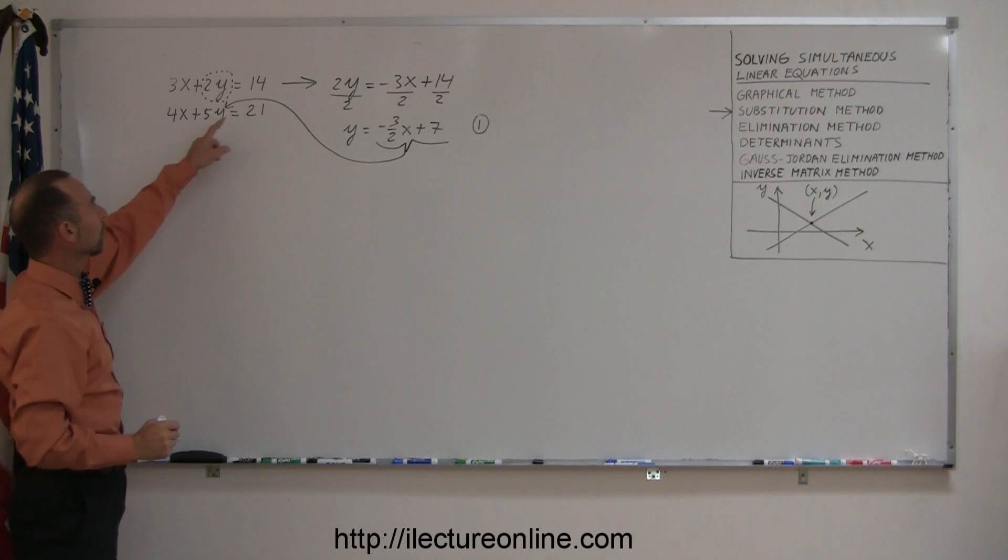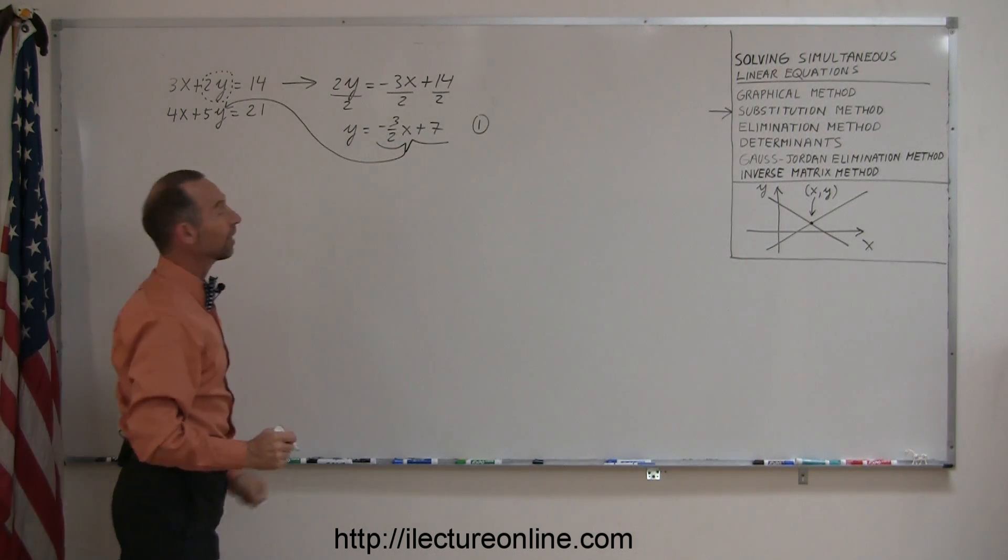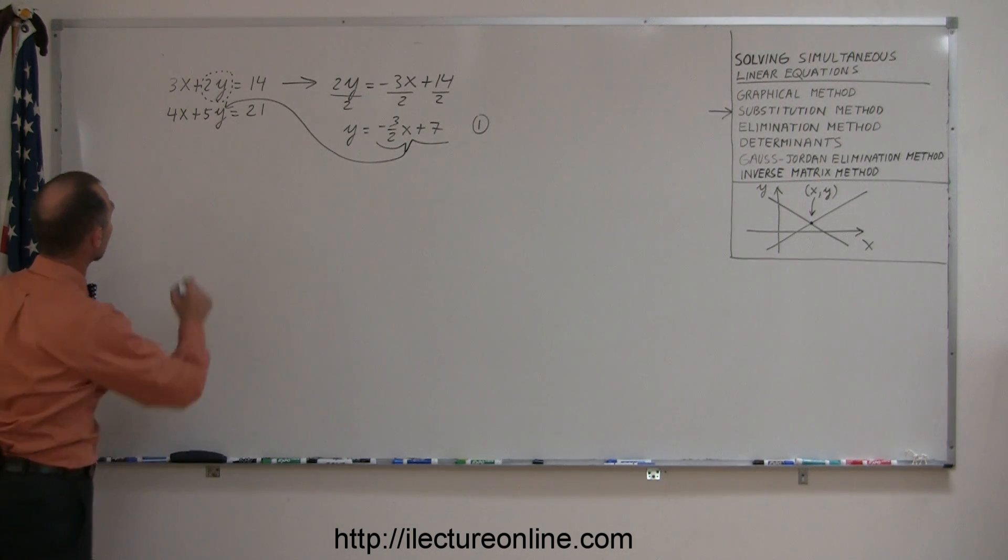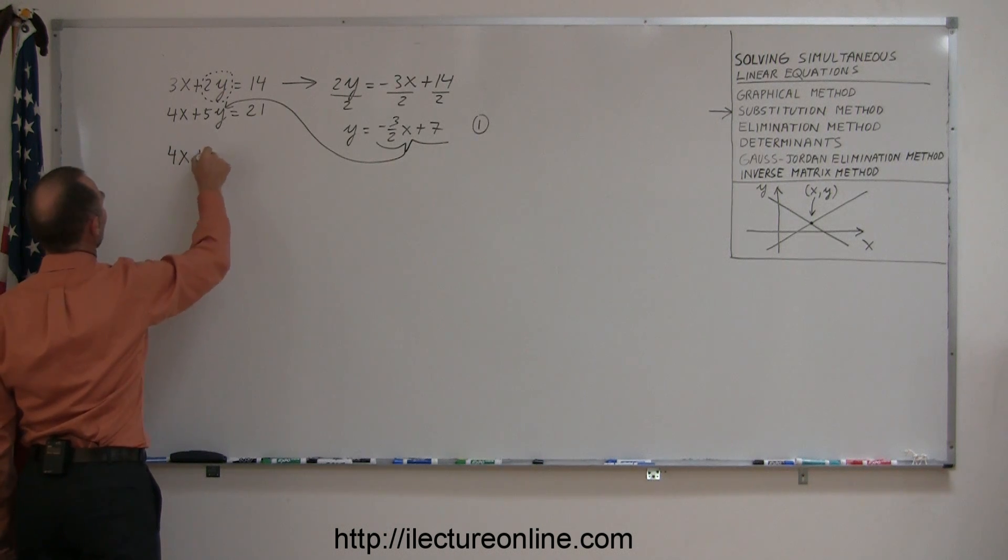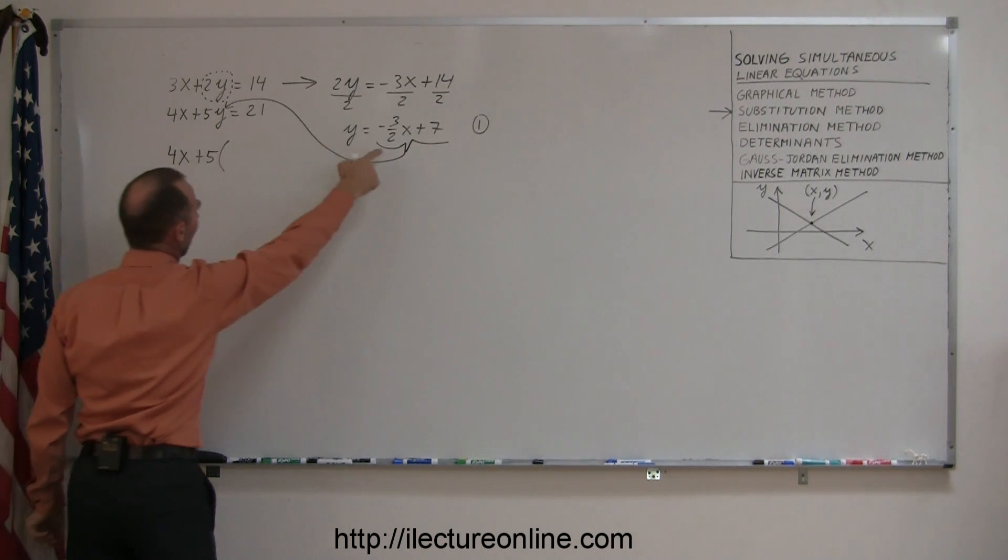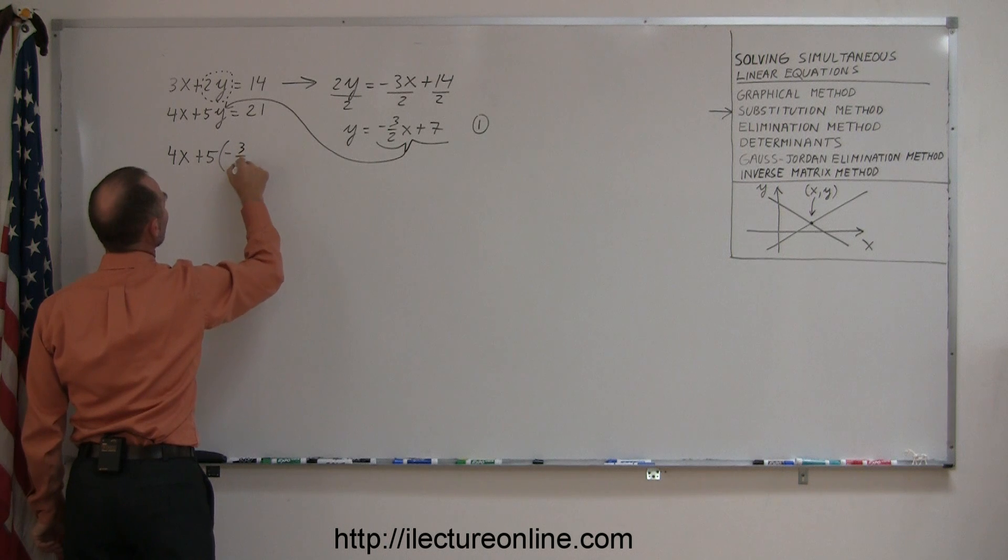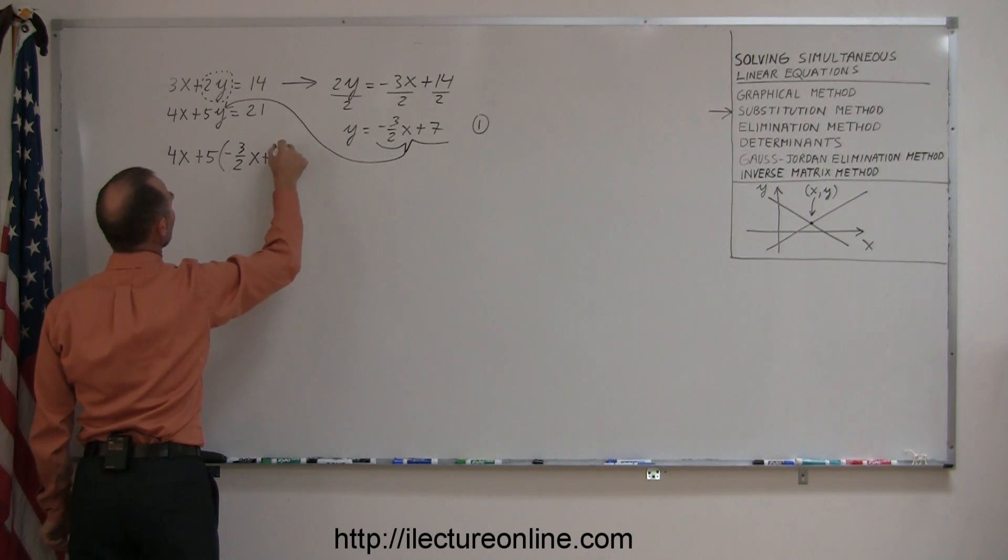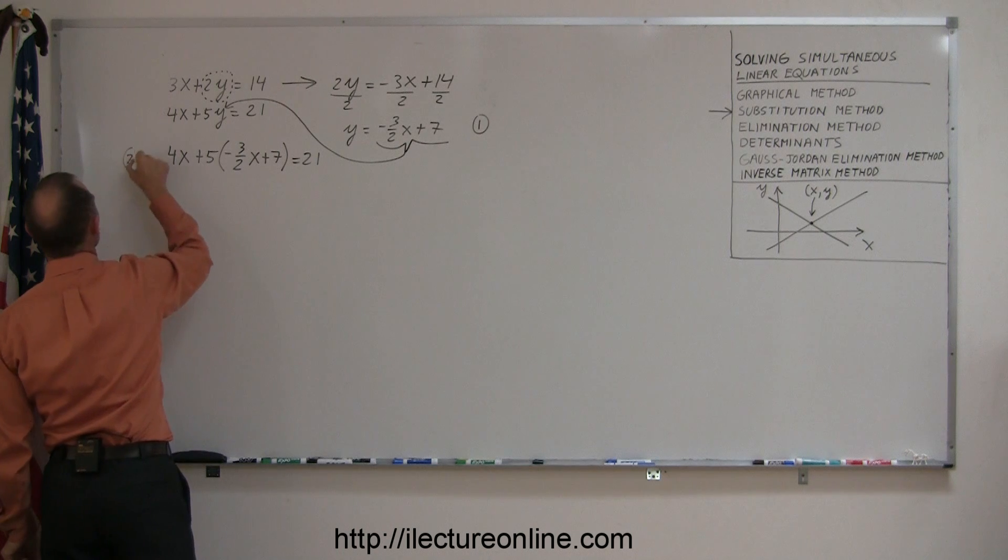So instead of y, I will write minus 3 over 2x plus 7. So this is 4x plus 5 times, instead of y, I write minus 3 over 2x plus 7 equals 21. There's my second equation.